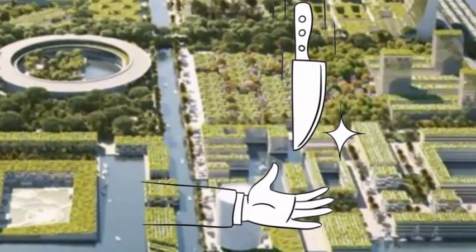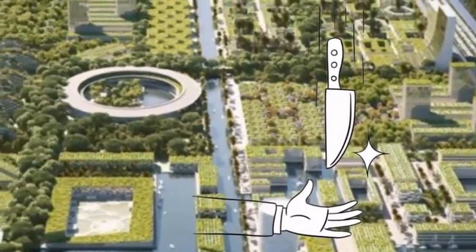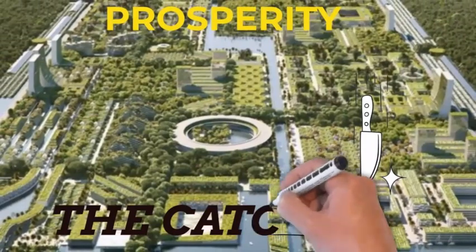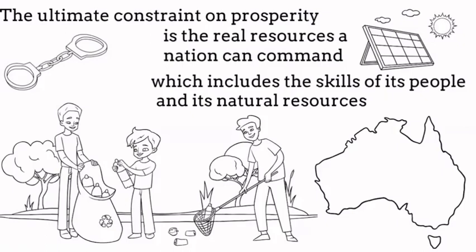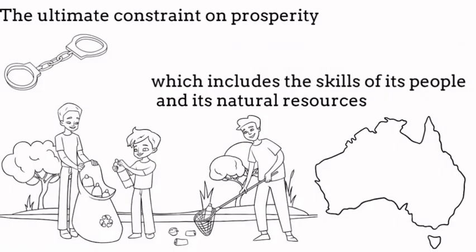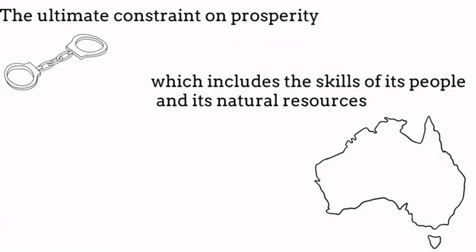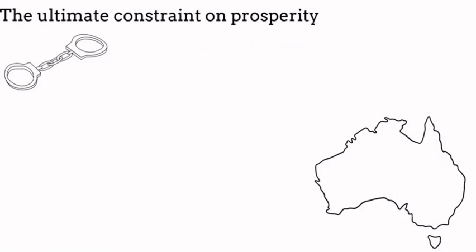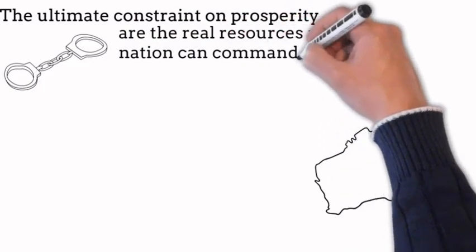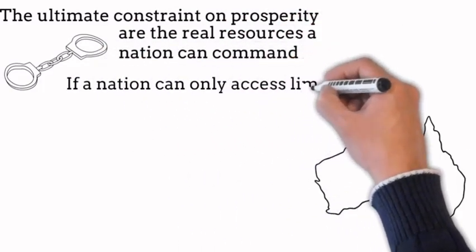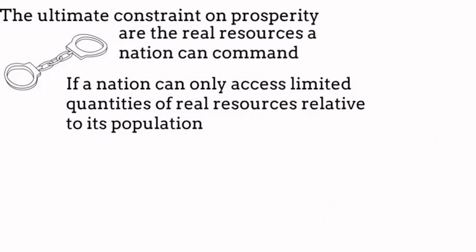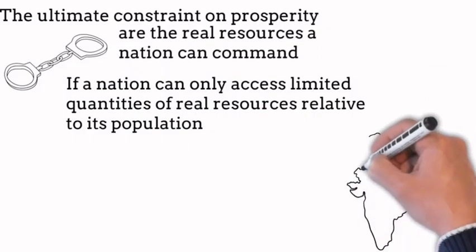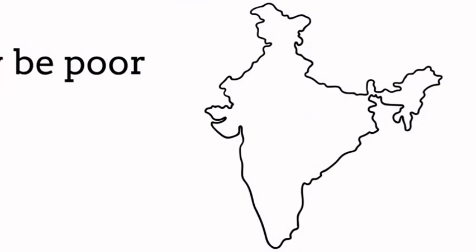Last time on Modern Money, we looked at how to achieve prosperity. This time: what's the catch? Remember that the ultimate constraint to prosperity are the real resources a nation can command. But what happens when these are in short supply? If a nation can only access limited quantities of real resources relative to its population, the nation in all likelihood will be poor.